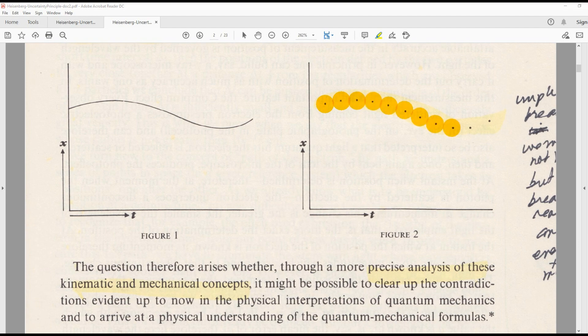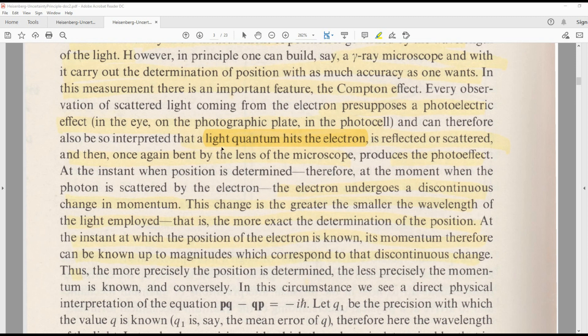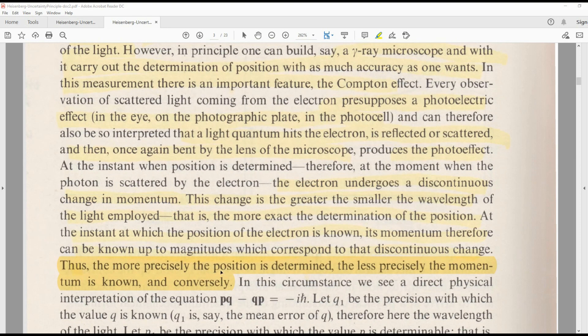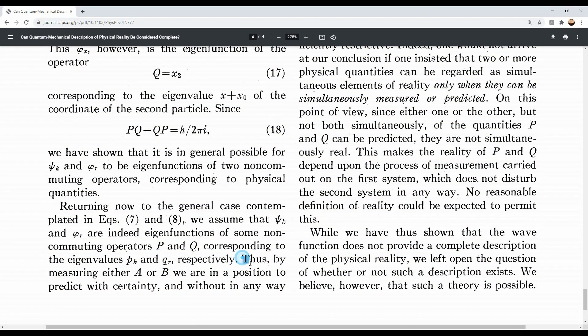But why is this? Heisenberg justifies this by discussing the problems of using a light photon to measure an electron. So at the instant when you try to measure the exact position, the electron undergoes a discontinuous change in momentum. So the more precisely you determine the position, the less precisely the momentum is known. In other words, if you know the exact position, you cannot know the momentum, and that is the indeterminism.